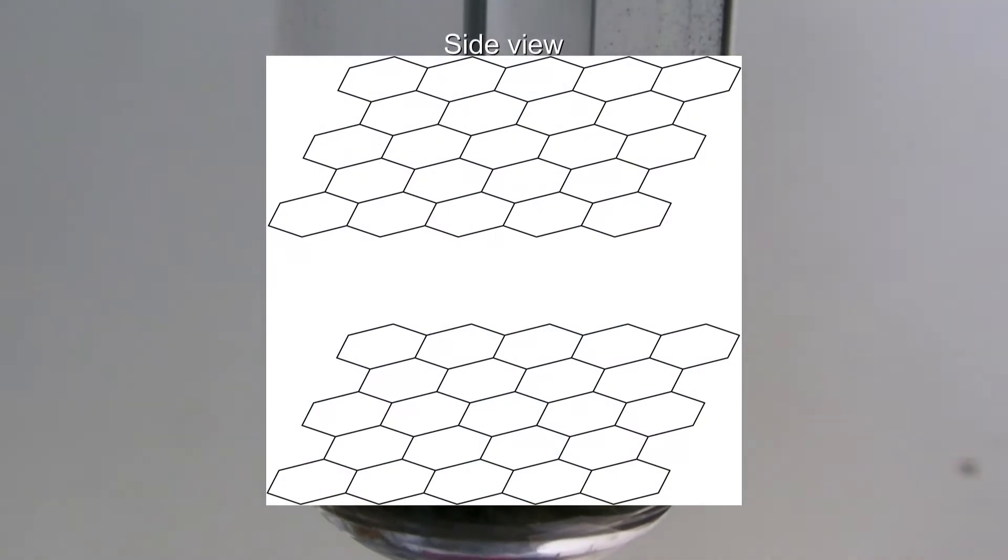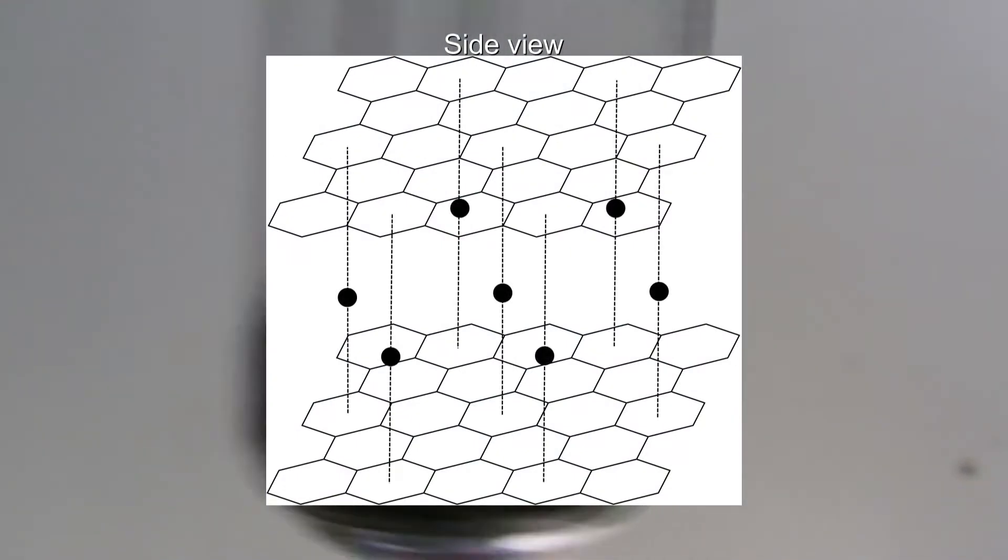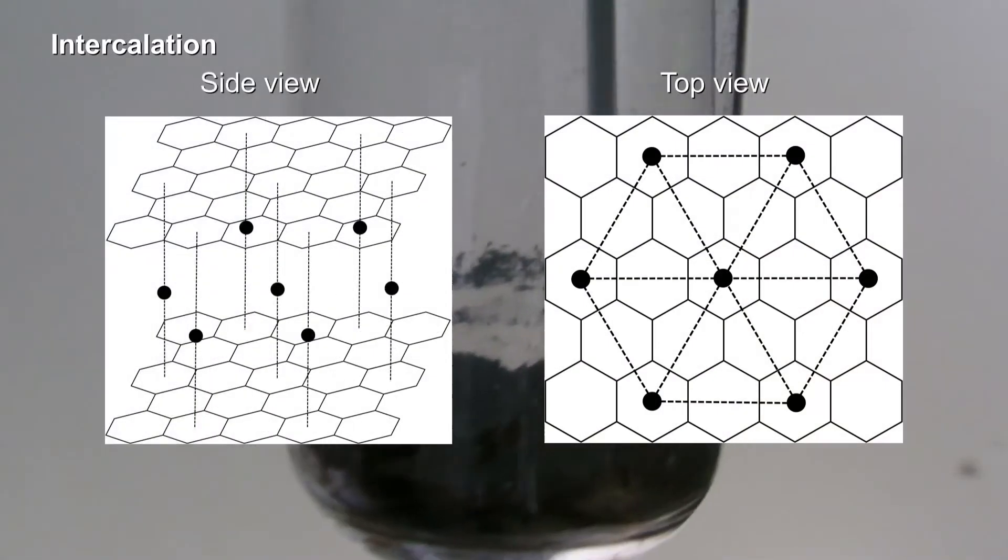Graphite is made out of layers of carbon between which atoms or ions can be inserted. This is called intercalation, which is why potassium graphite is also called an intercalation compound.